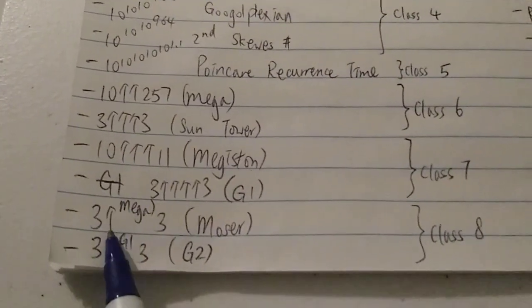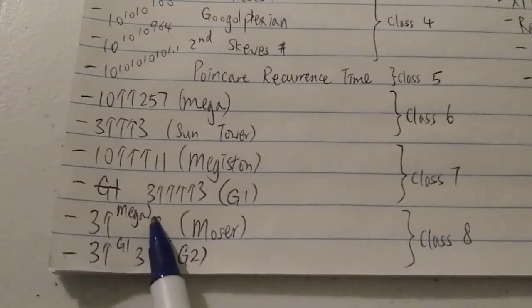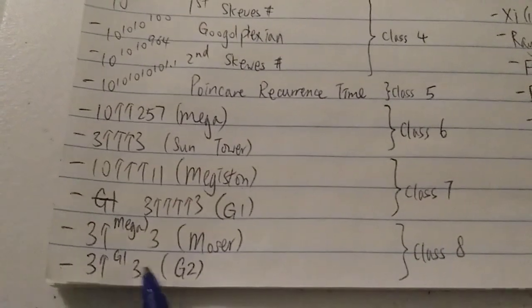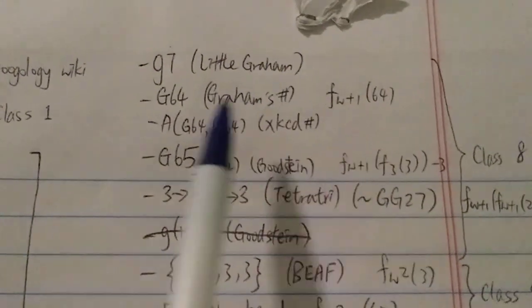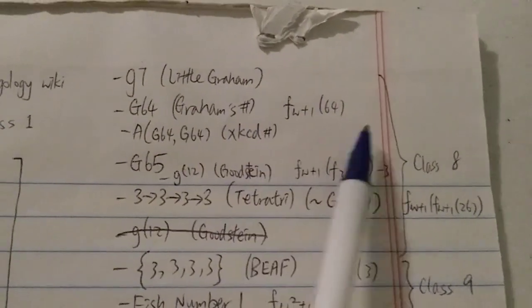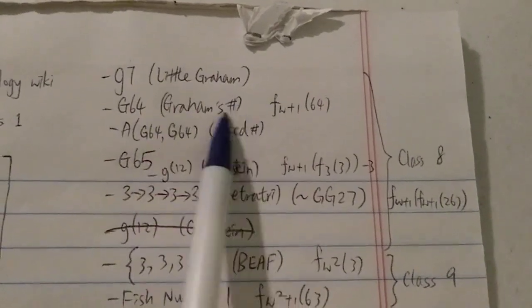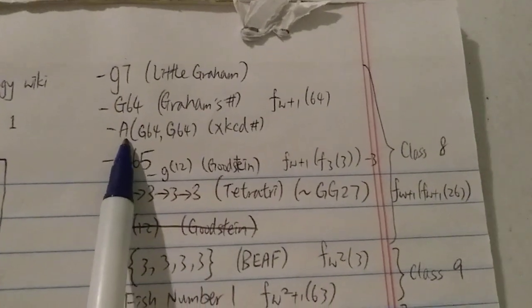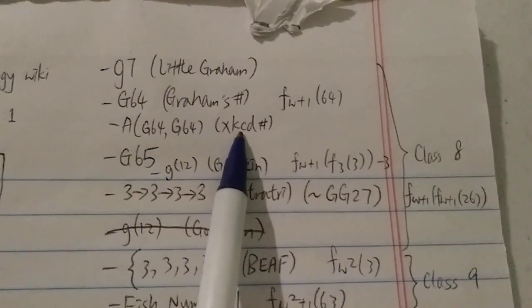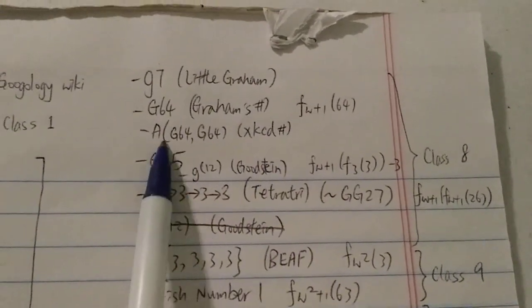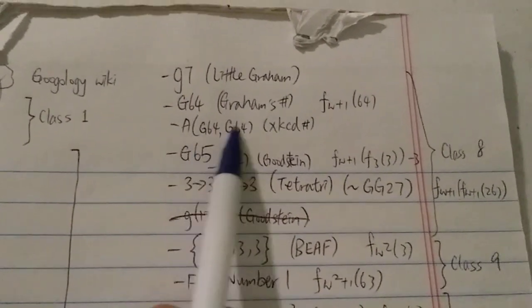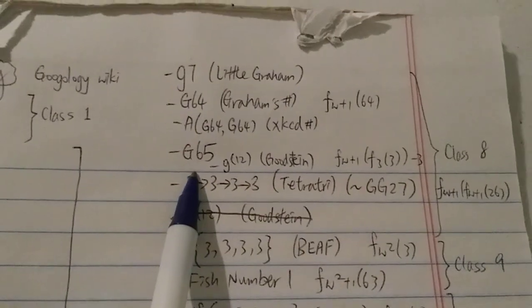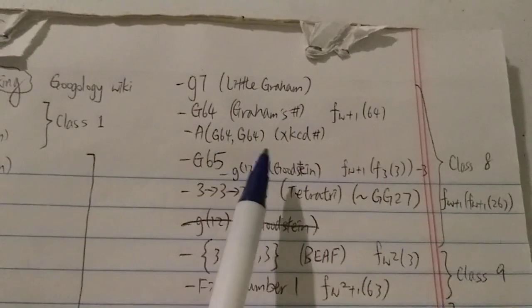Next is Moser, which is 3 with Mega up-arrows 3 — class 8. Then we have g2, which is 3 with g1 arrows 3. Still class 8, we have g7 — the original Graham's number — and then g64, the famous Graham's number, which is my personal favorite. After that comes the XKCD number: A(g64, g64) using the Ackermann function. Ironically, this is actually smaller than g65, which shows that the G-sequence grows faster than the Ackermann function.